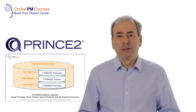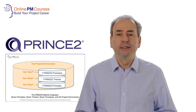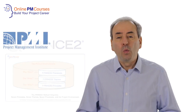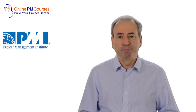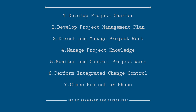Let's have a look at the different views that PMBOK and PRINCE2 take on the processes that form the project integration cluster. Within PMBOK we've got seven processes: the first is to develop the project charter; the second is develop project management plan; then direct and manage project work; manage project knowledge; monitor and control project work; perform integrated change control; and finally close the project or phase.